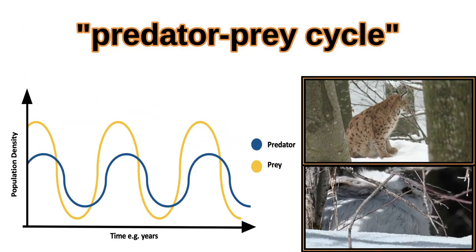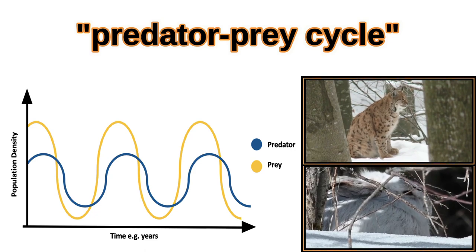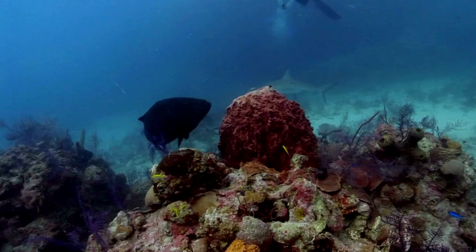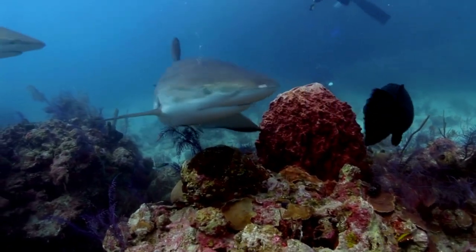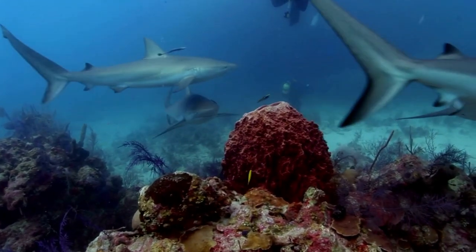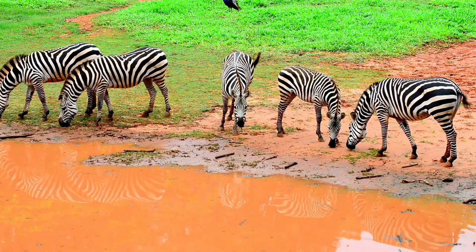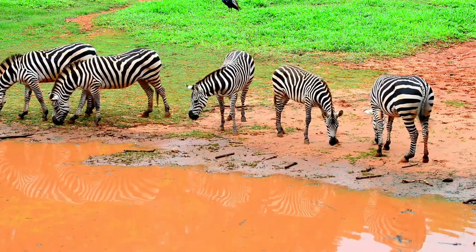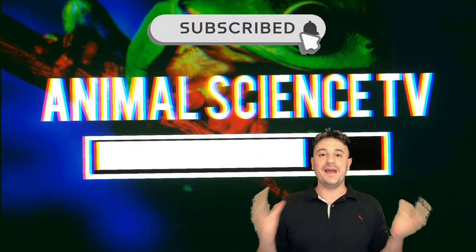If you look more closely at this graph, you can see that these extreme population dynamics are not wild. In fact, what you are looking at is a repeating cycle — a predator-prey cycle. Today, we learn what an ecosystem is, how food chains work, and why these extreme changes in predator-prey populations are normal and even healthy. My name is Chris and welcome to Animal Science TV.